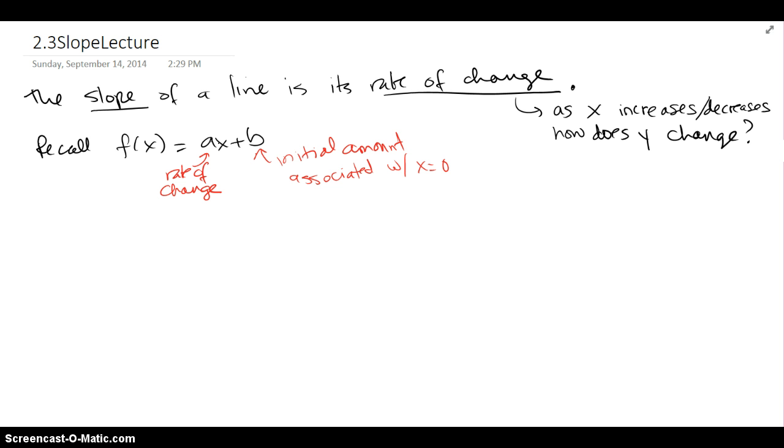Recall we talked about a linear function. We said it was f(x) equals ax plus b, where a was the rate of change and b was that initial amount or starting amount, which was really associated with the x value of 0.